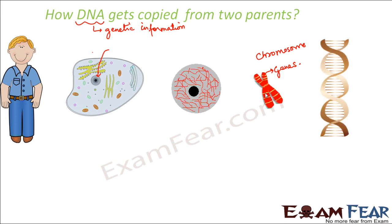Now what are these genes made up of? They contain the genetic material called DNA. This DNA is passed on from the parents to the offspring, and that is how traits are passed on from one generation to the next. So you now know where the DNA is located, and you should understand how sexual reproduction helps to produce variations and how it helps in inheritance of traits from one generation to the next.